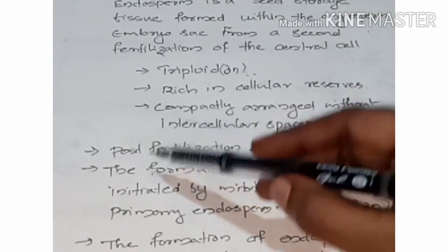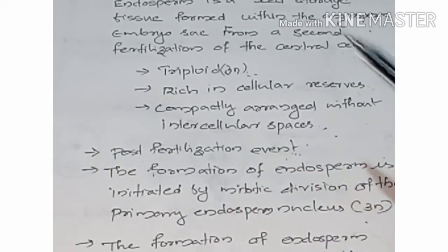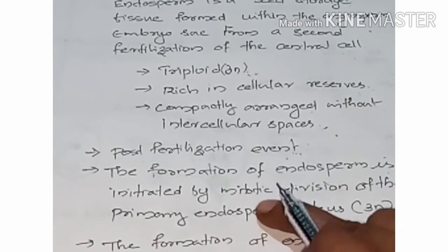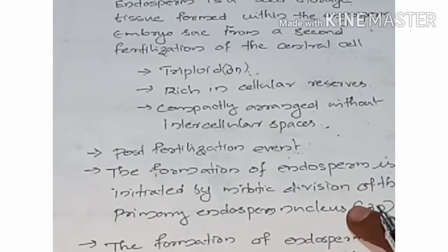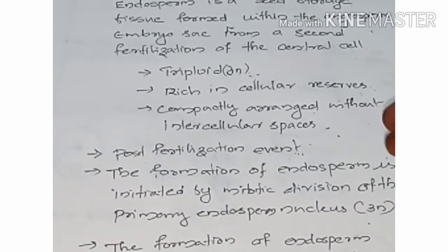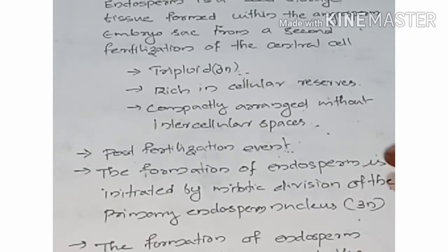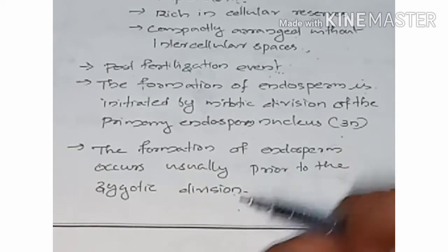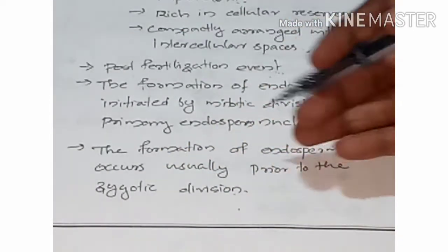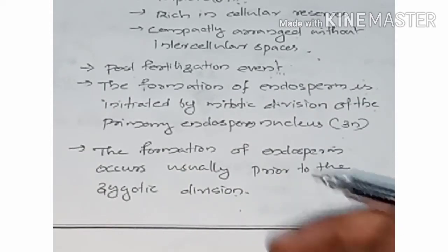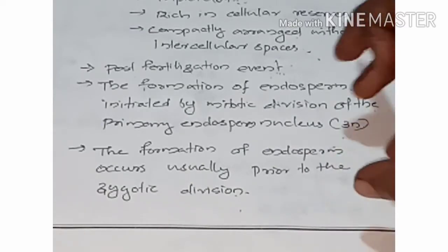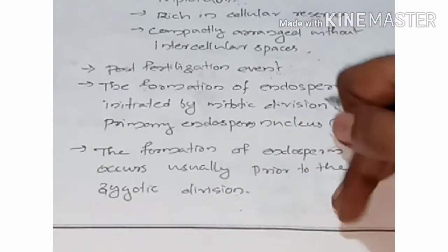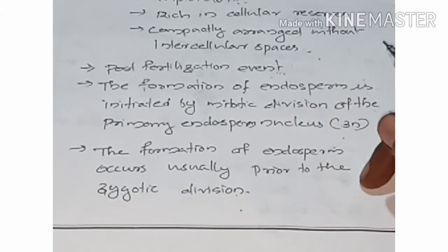Endosperm formation is a post-fertilization event. The formation of endosperm is initiated by mitotic division of the primary endosperm nucleus. The formation of endosperm occurs usually prior to the zygote division. Endosperm functions to nourish the embryo during embryo development.